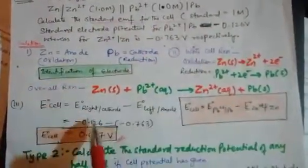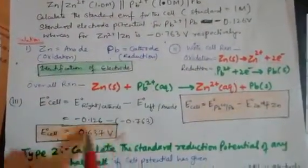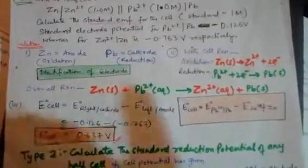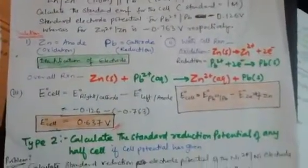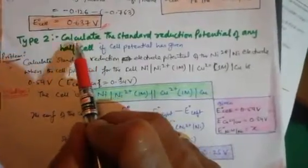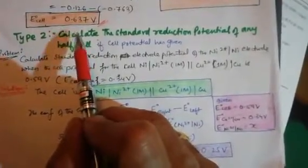If these two values are given, we can calculate the cell potential. If they are not given in the question, you can look them up from the standard electrode potential table.